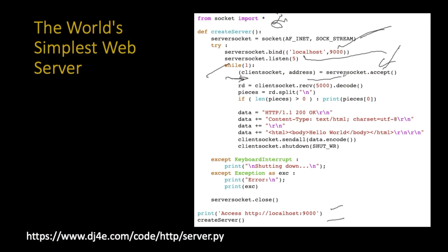You'll notice the receive and send are the same function calls because it's a two-way thing. Whatever the browser is sending, the server is receiving, and whatever the server sends, the browser receives. They can do it simultaneously, but usually you take turns — it's your turn to listen, my turn to send, then I'll listen. In this case there's only one step: the server listens, gets the GET request, sends the data back.